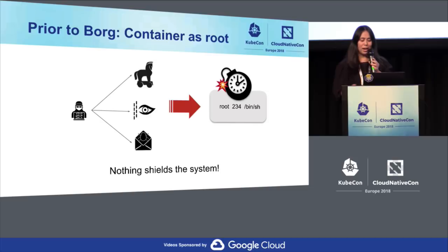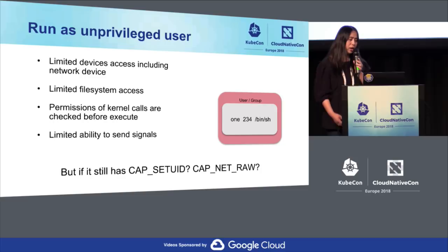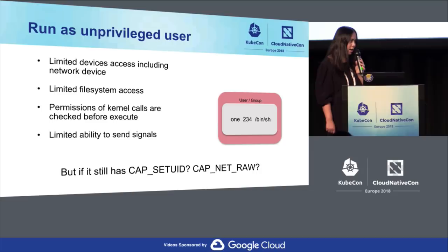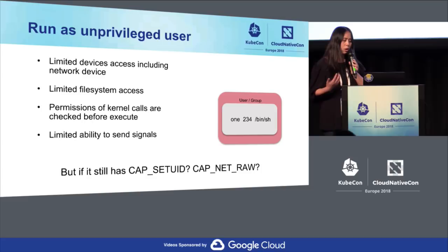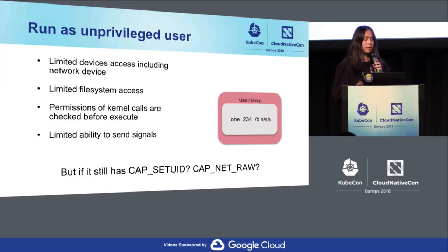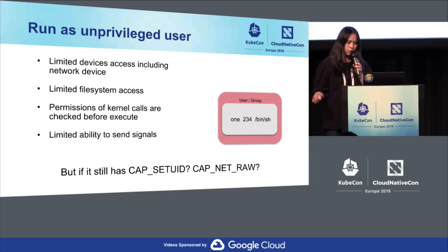This is obviously bad. So we changed the orchestration to enforce that by default all work nodes run as unprivileged users, except for the minimum set of daemons needing administrative tasks. With this change, user-space processes have limited access to devices, including network devices, limited access to the host filesystem, kernel calls are checked before execution, and processes cannot send kill signals to processes owned by different users.